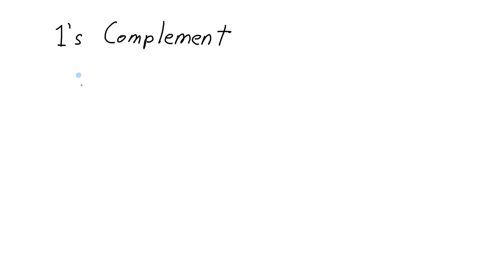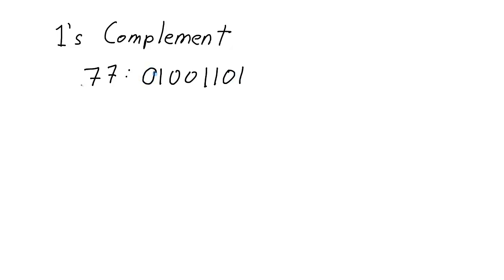Another system is called the 1's complement system. In the 1's complement system, negative numbers are represented by the bitwise complement of the positive number. So using our number 77, which is 1001101, in an 8-bit system that's 01001101. To represent negative 77, all we do is flip all the bits, giving us 10110010.